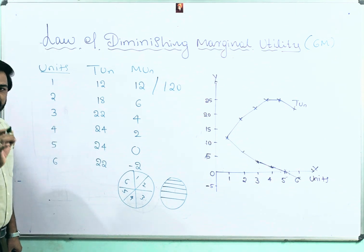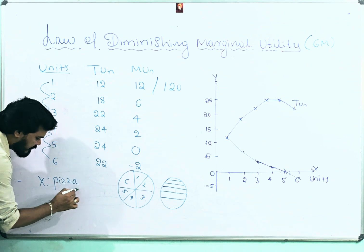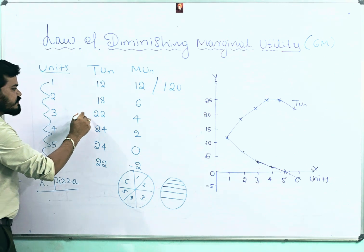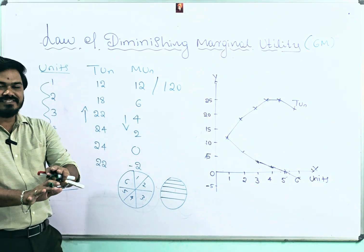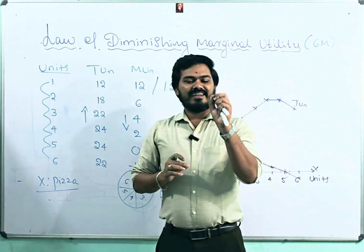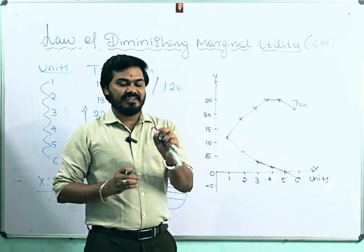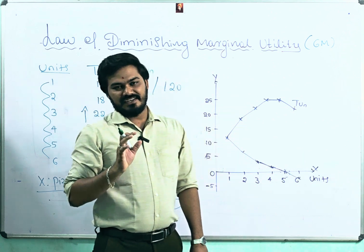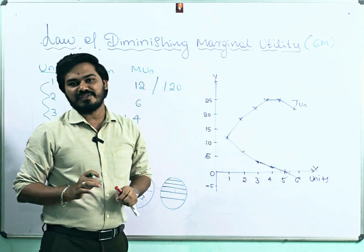Coming back to the definition: if a consumer is consuming one after another units of X commodity — here pizza is the X commodity — total utility is increasing and marginal utility is decreasing, and all other things remain constant. 'All other things remain constant' means: utility is measurable, taste should be constant, the consumer should be rational, there should be no time gap between consumption, and commodity size should be standard. Only if all these conditions hold will this law be applicable to real society.